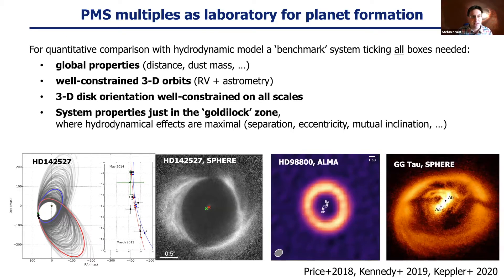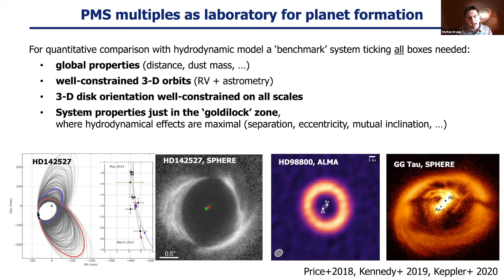Ideally, you would like an object that has well-defined global properties, such as a well-known distance and a well-determined dust mass. You would also want well-characterized orbits, which means radial velocity and astrometry. You would like to constrain the three-dimensional shape of the disk, and the system should be at the right orbital separation, eccentricity, or mutual inclination to study certain hydrodynamic effects.